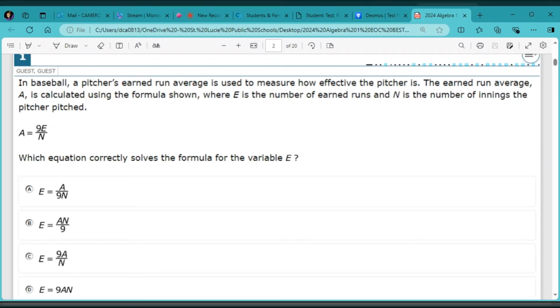And let's get right into the first question. This says, In baseball, a pitcher's earned run average is used to measure how effective the pitcher is. The earned run average A is calculated using the formula shown where E is the number of earned runs and N is the number of innings the pitcher pitched. A equals 9E over N, which equation correctly solves the formula for the variable E.